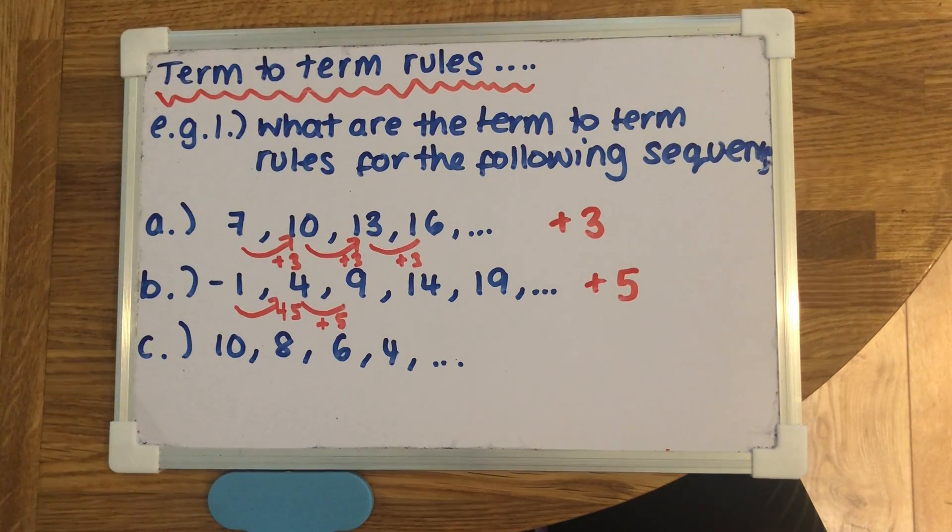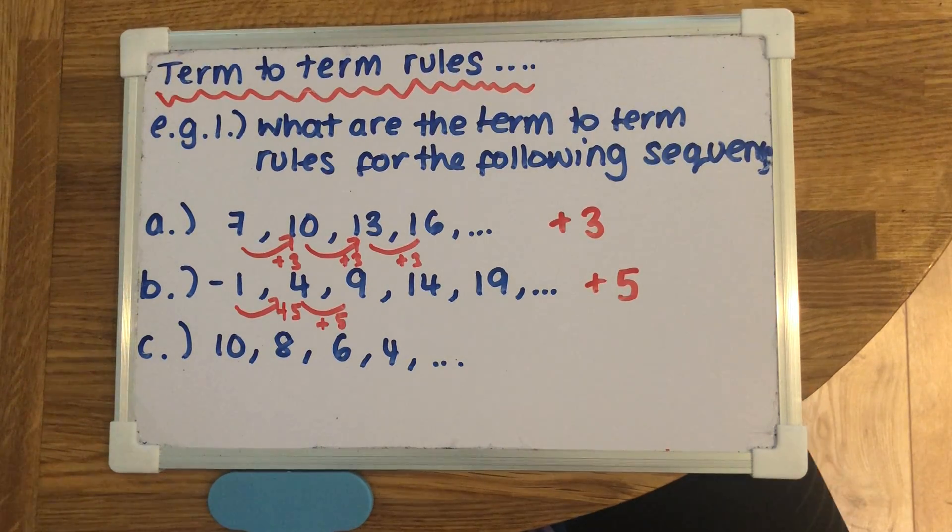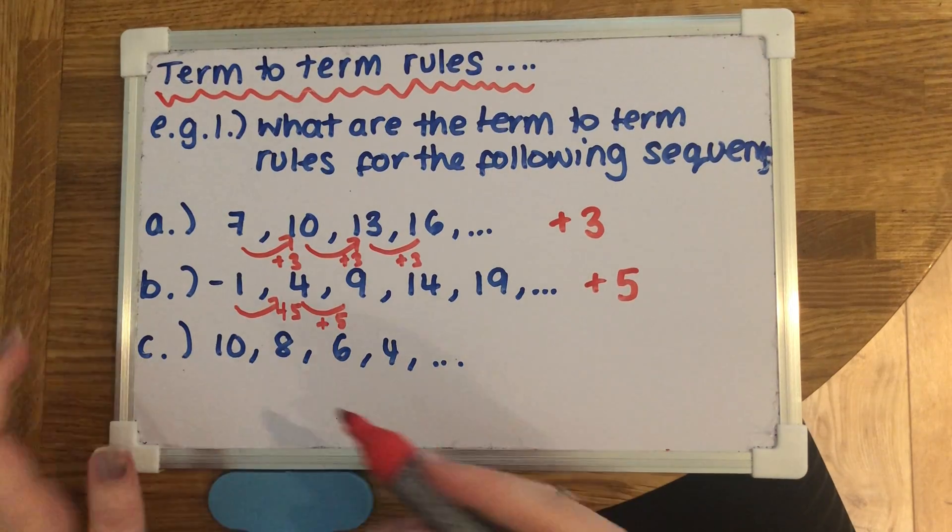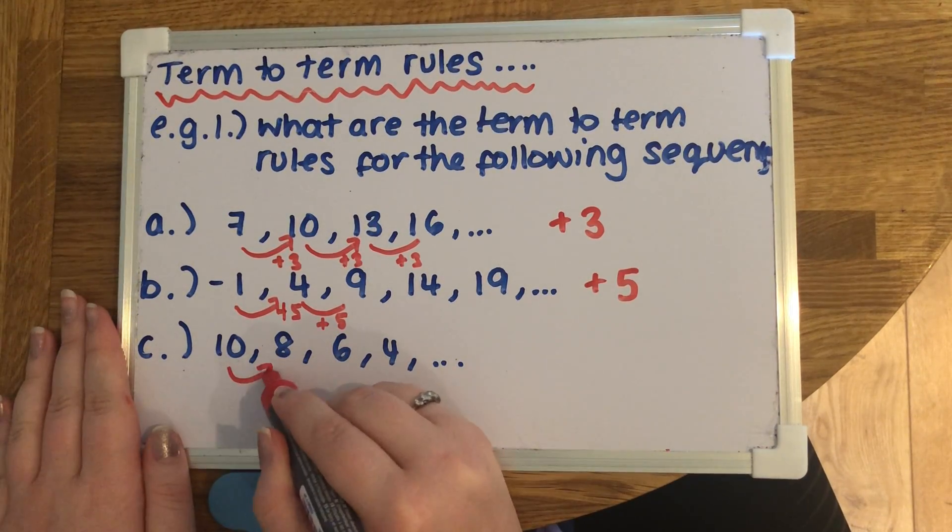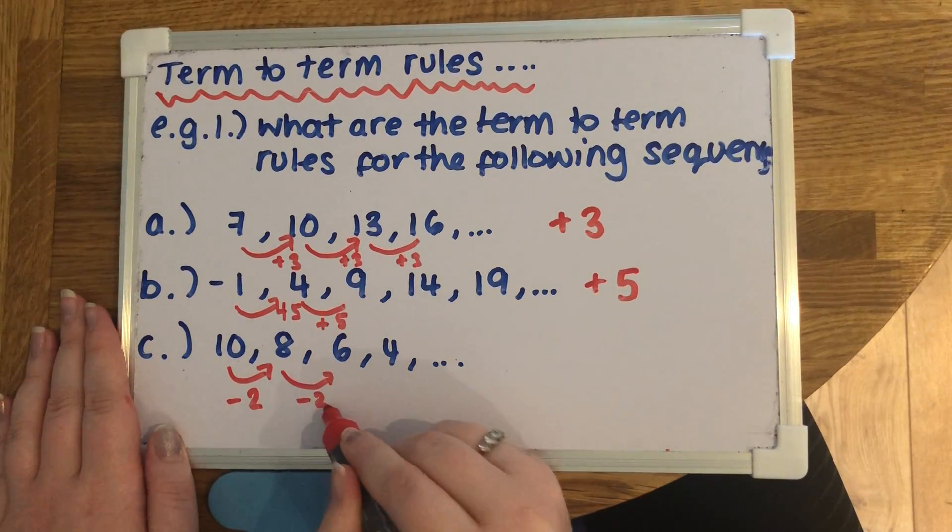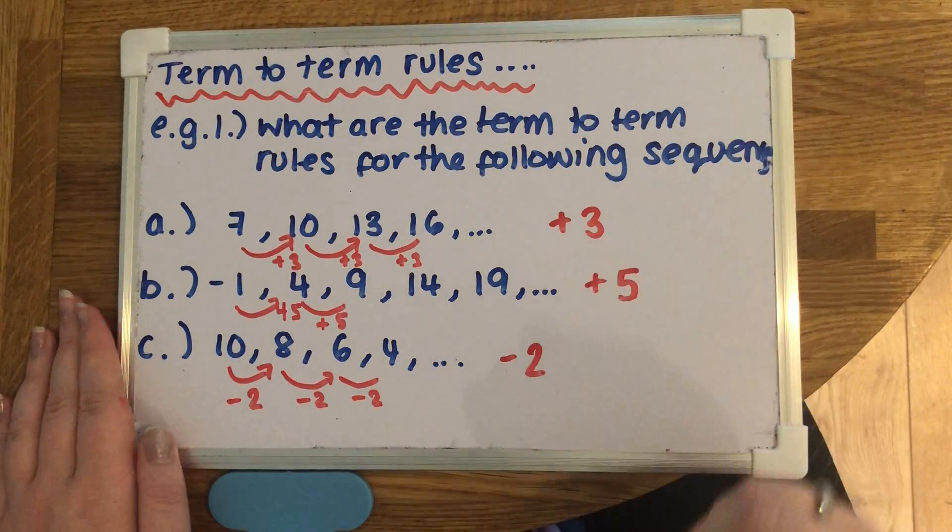The last one's slightly different. If you look at these numbers, we're not going up this time; we're actually decreasing because we're starting at 10, then going down to 8, then 6 and 4. To get from 10 to 8, we'd have to subtract 2, and then if we check the next ones, they would do the same thing. So this one would just be take away 2.